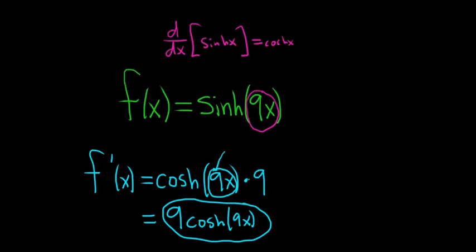The derivative of 9x is 9. That's the chain rule. The last thing you do is put the 9 in front. That's it. I hope this video has been helpful.